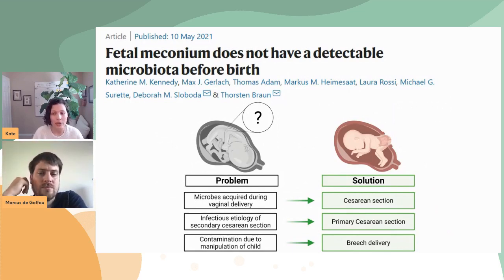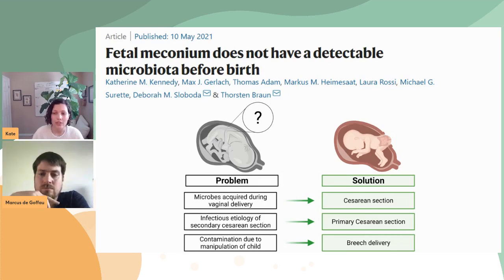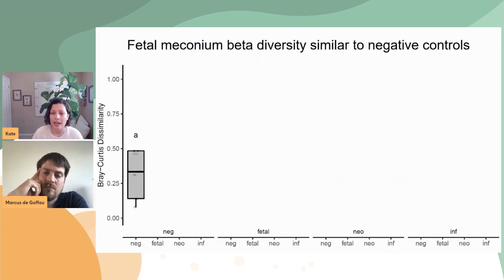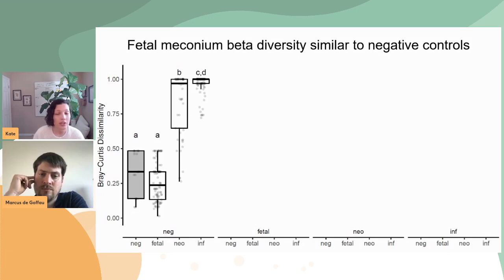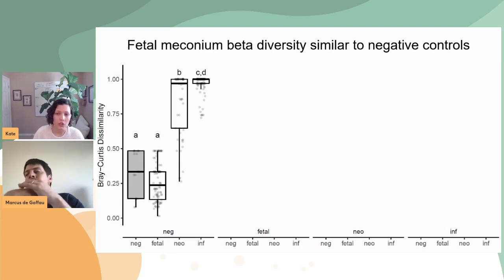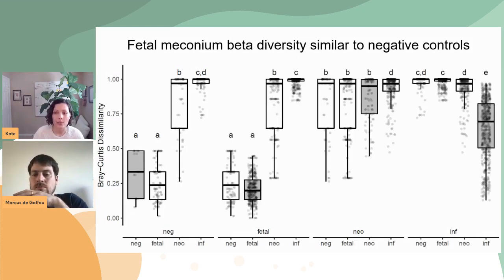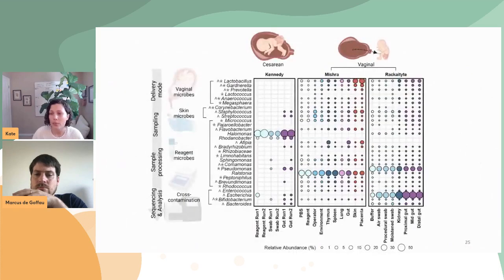To avoid vaginal microbiome contamination, I was involved in a study where we collected fetal meconium during breech cesarean deliveries — allowing us to collect that sample without contamination from vaginal microbes or from manipulation of the child. What we found in a similar analysis was that the distance between fetal meconium samples and negative controls was no different from the distance between negative controls and other negative controls, whereas neonatal meconium collected as first-pass meconium after birth, as well as infant samples, were different from those negative controls.